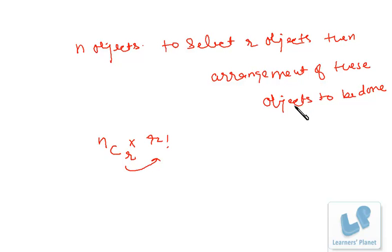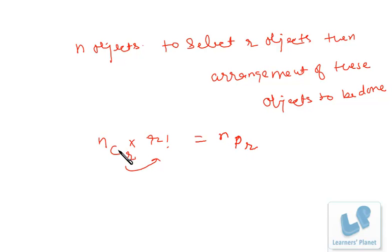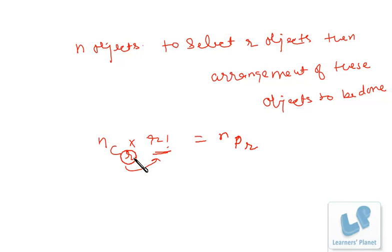To restate: from n objects we select r objects — that is nCr. Then we arrange those r objects at r places — that is r factorial ways. So nCr into r factorial is the complete solution, and this is nothing but nPr — permutation. The difference is: combination is strictly selection, while permutation is arrangement of selected objects. Arrangement of selected r objects is permutation; only selection is combination.